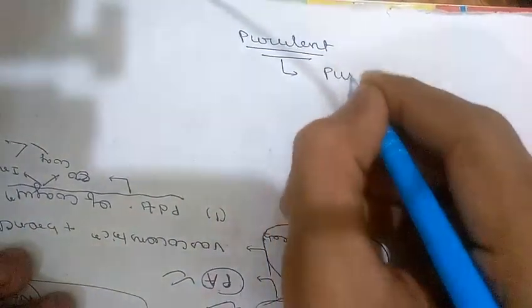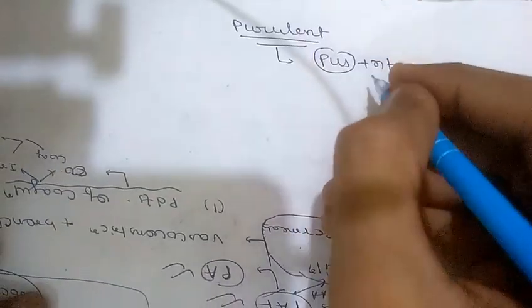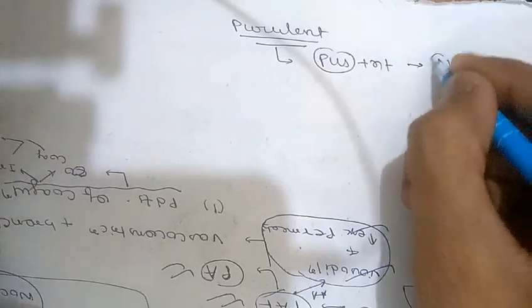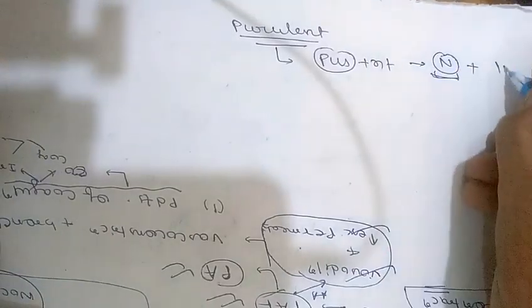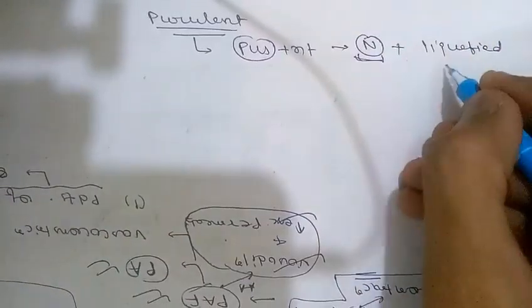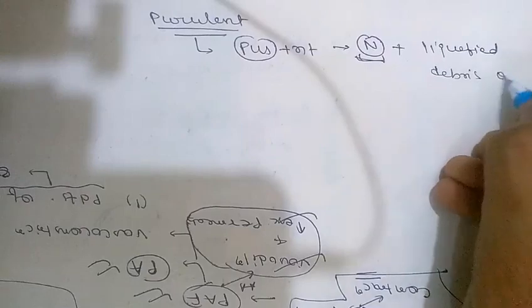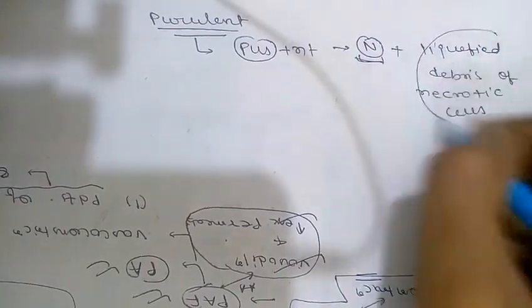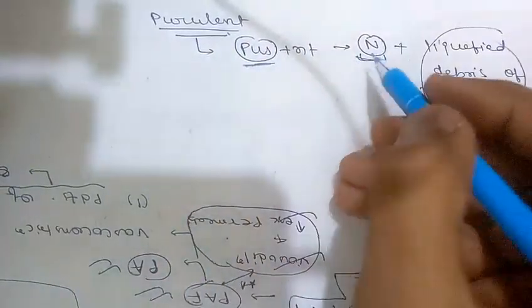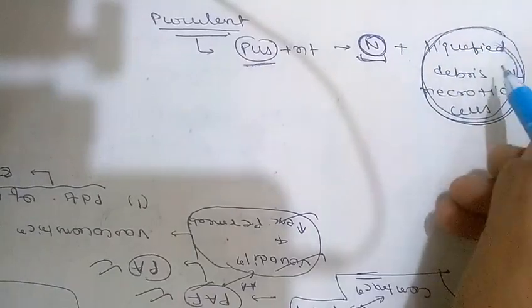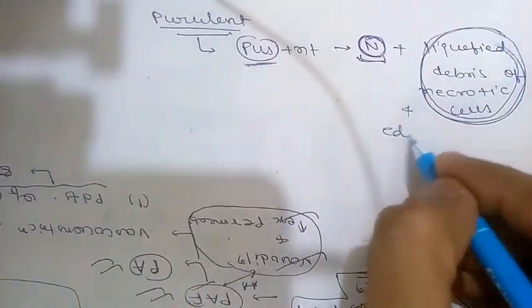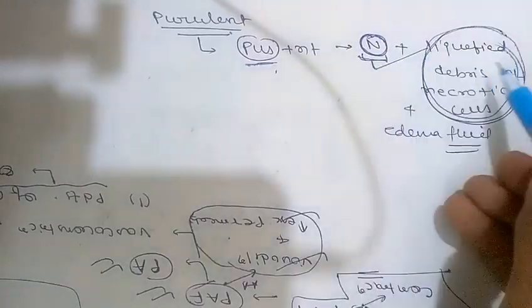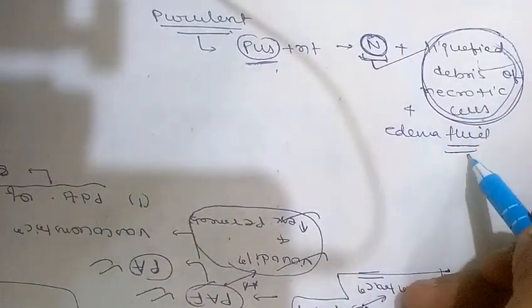The next type is purulent inflammation, which is characterized by the production of pus. Pus is an exudate consisting of neutrophils, liquefied debris of necrotic cells, and edema fluid. These are the three main contents of pus.